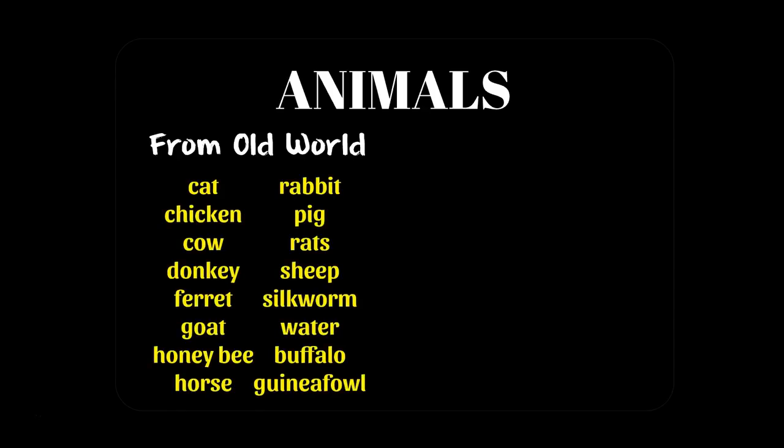Starting with the exchange of animals — from the old world, meaning from Europe, this is what Europeans brought to the Americas, animals that did not exist in North and South America: cats, chickens, cows, donkeys, goats, honeybees, horses, pigs, rats — European rats are a whole other phenomenon, as we'll see — water buffalo, guinea fowl, sheep, and more. Look at all these essential elements of livestock that didn't exist in the Americas.